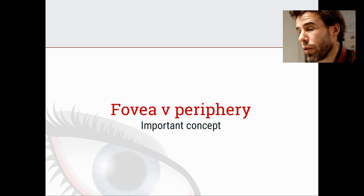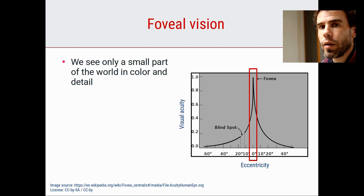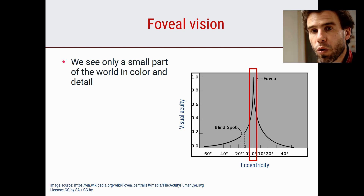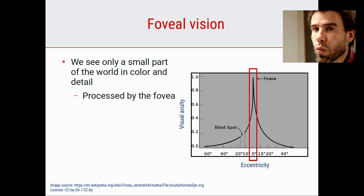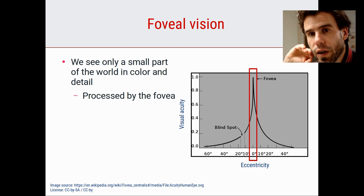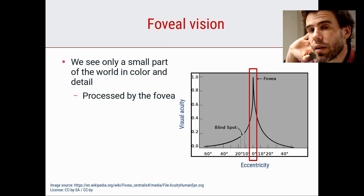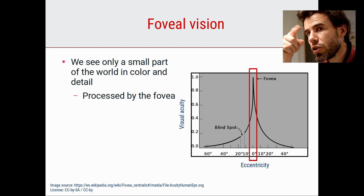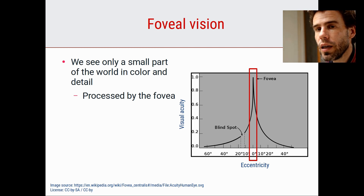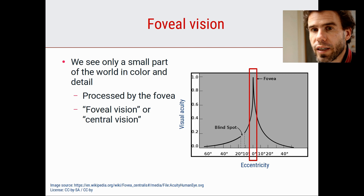The first key concept is the fovea versus the periphery. The human retina is very non-homogeneous - we see only a very small part of the world in color and in detail, and that is the part that falls onto our fovea. We have a small dense foveal pit on our retina with photoreceptors at the back of our eye. In the fovea, almost all our cone photoreceptors are located, which allows us to see with high visual acuity - sharp, with a lot of detail, and in color. That's foveal or central vision.